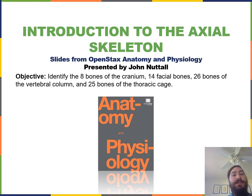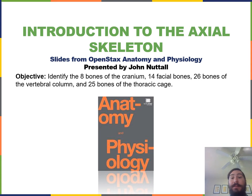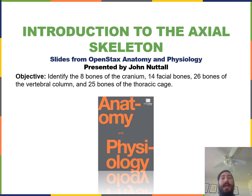Hello. In this video, I will identify the eight bones of the cranium, 14 facial bones, 26 bones of the vertebral column, and the 25 bones of the thoracic cage.